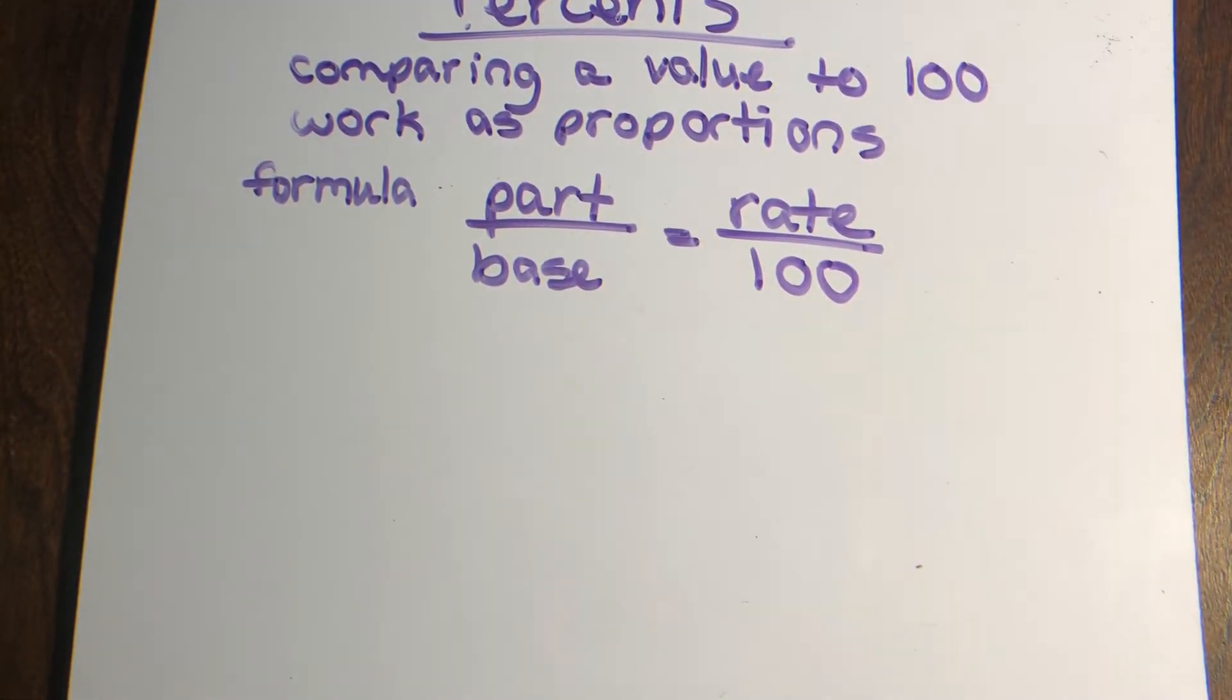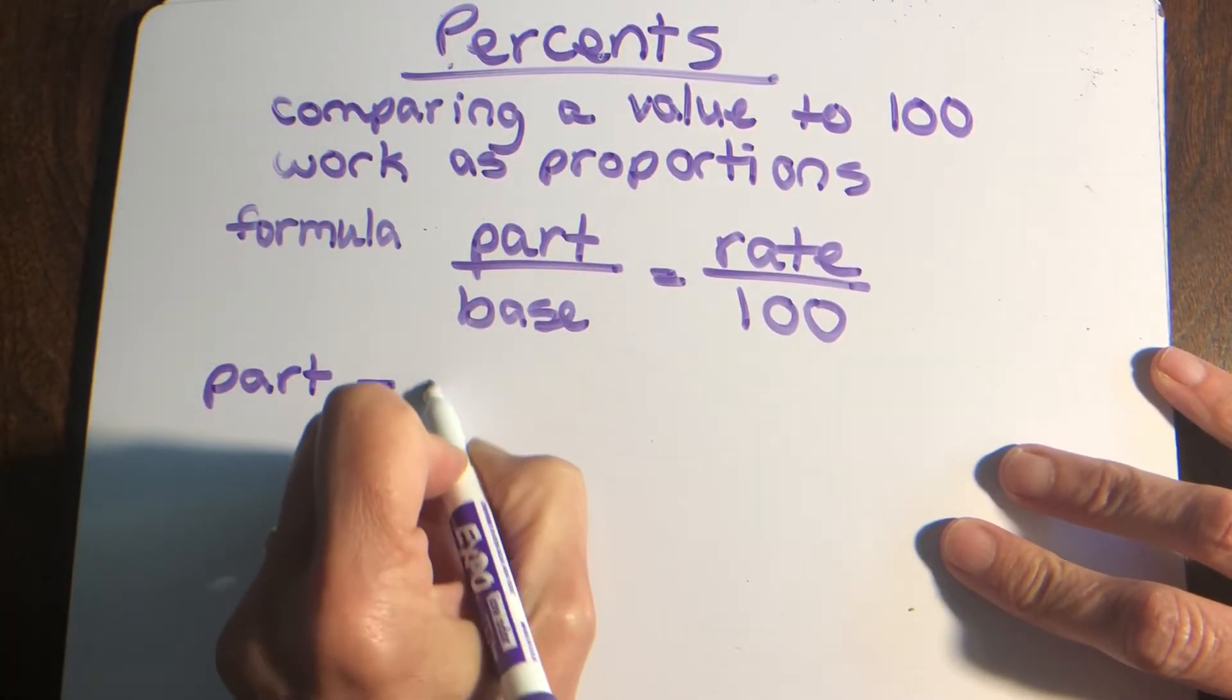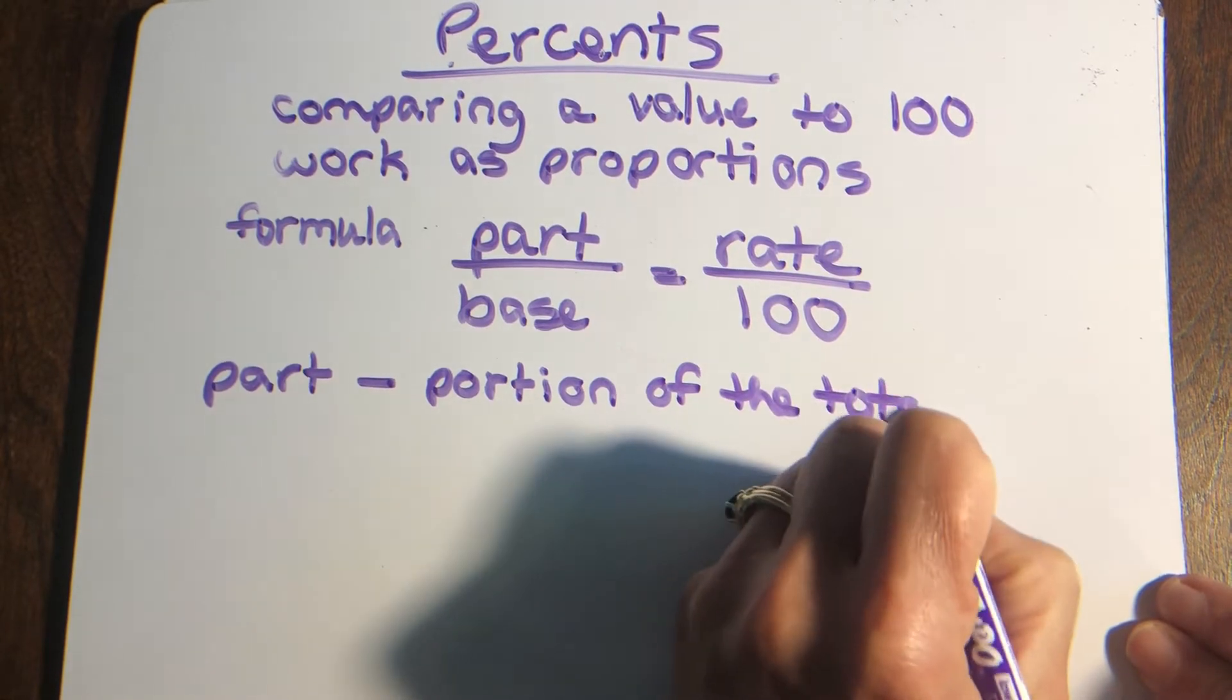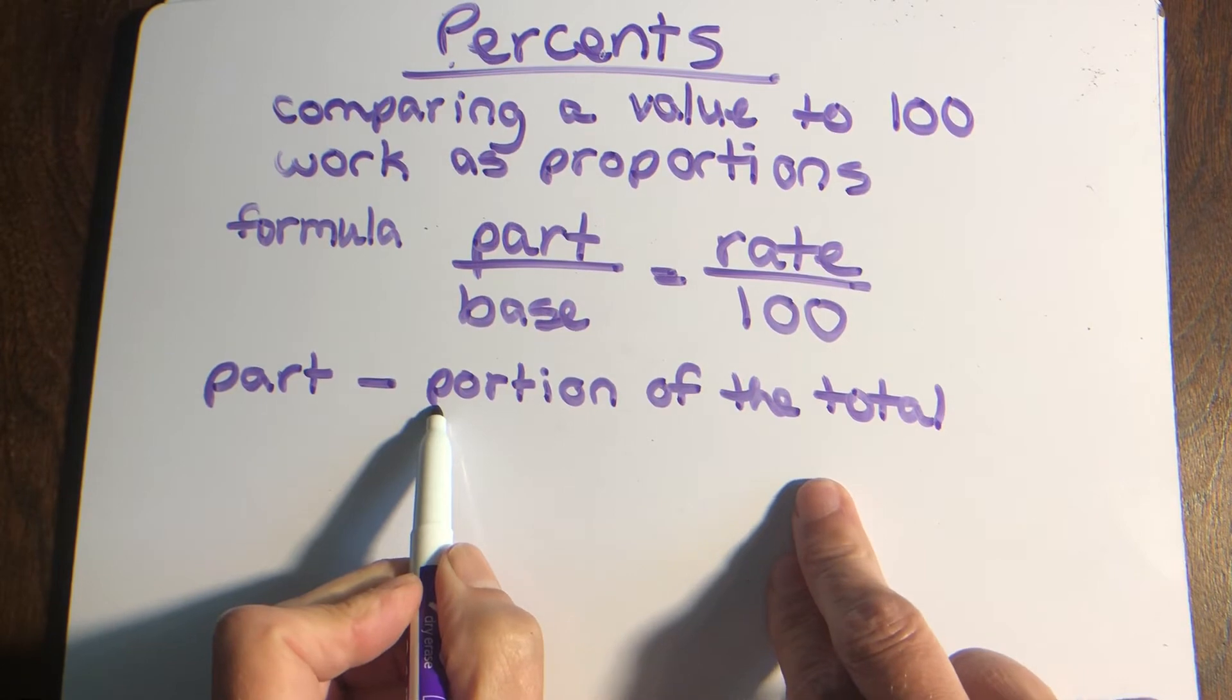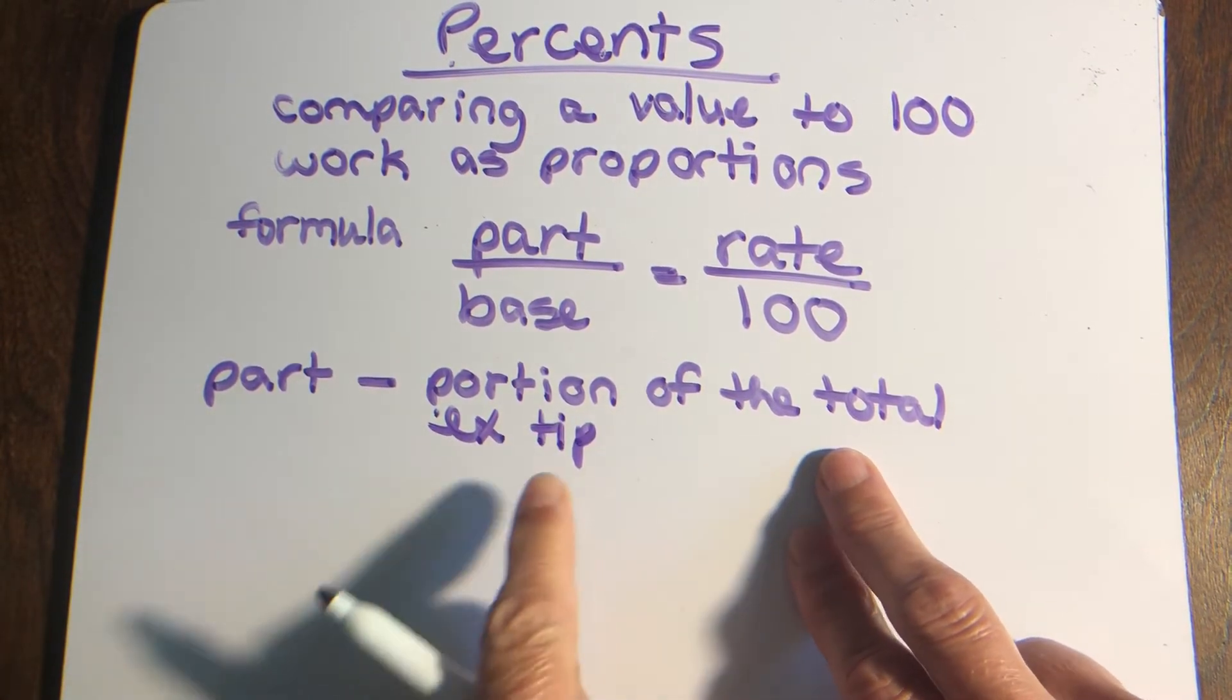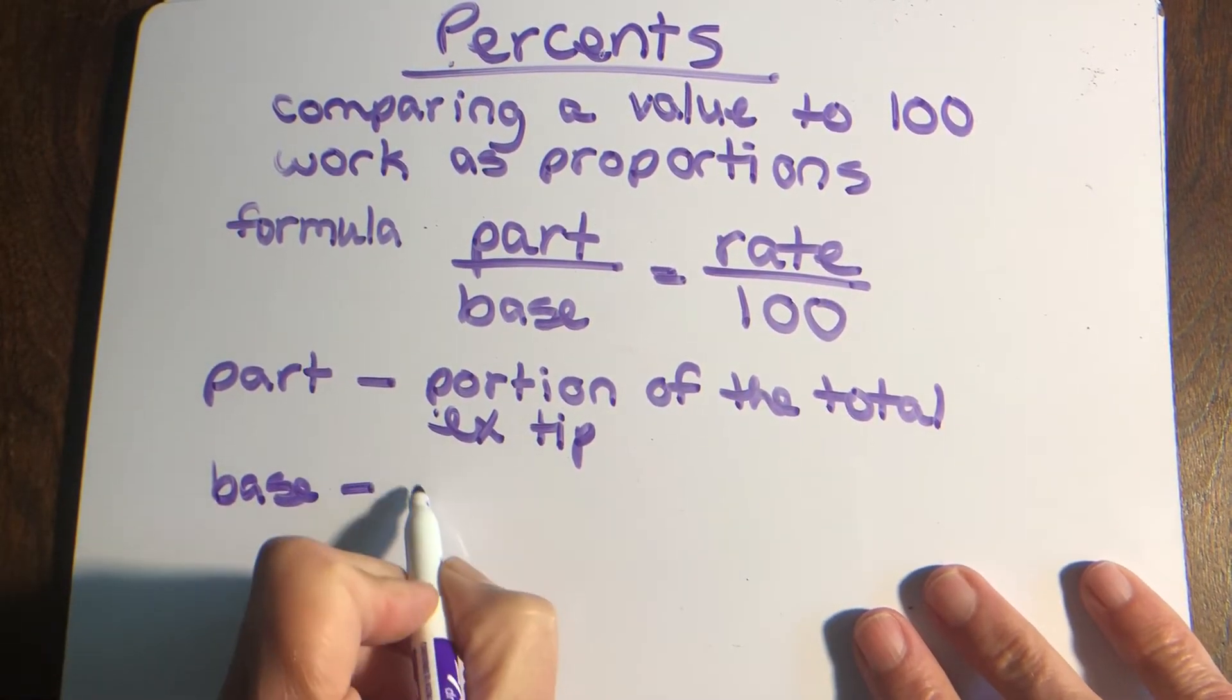Our formula is part over base equals rate over 100, and that 100 will always be in our formula. The part is the portion of the total. For example, if you're at a restaurant and have a bill, if you leave a tip, the tip would be the part. The base, the whole amount, would be your bill.